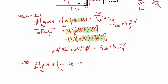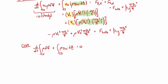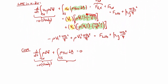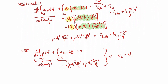Applying conservation of mass to the same control volume: the time rate of change of mass is zero (steady flow). At the inlet, the mass flux is minus rho*v1*pi*d1²/4, and at the outlet it's plus rho*v2*pi*d2²/4. Note: I made a mistake earlier — the outlet term should be v2, not v2 squared. Simplifying (rho and pi/4 cancel), we get v2 = v1*(d1/d2)².